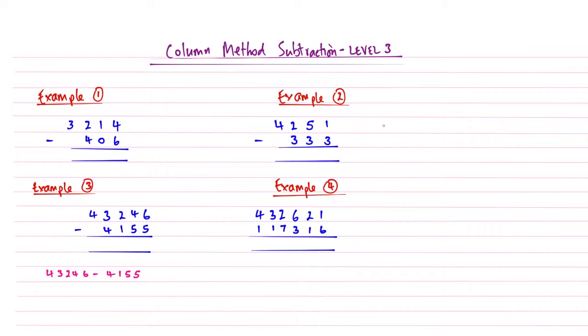So let's have a look at our first example. This is level 3 in our column method subtraction series. As you recall, what we have to do when we take part in any column method subtraction is we have to check every single time that the top number is bigger than the bottom. And if it's not, we need to borrow or compensate. So let's have a look at example number 1, because all level 3 is, is there's just going to be more than one column where we're going to have to compensate. So enough rabbiting on, let's crack on.